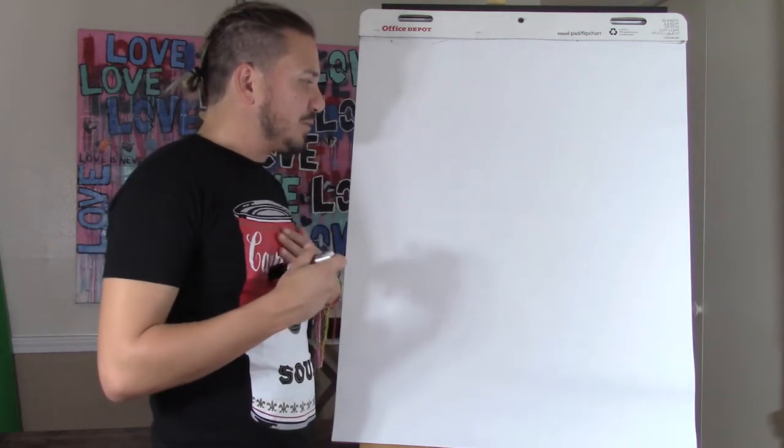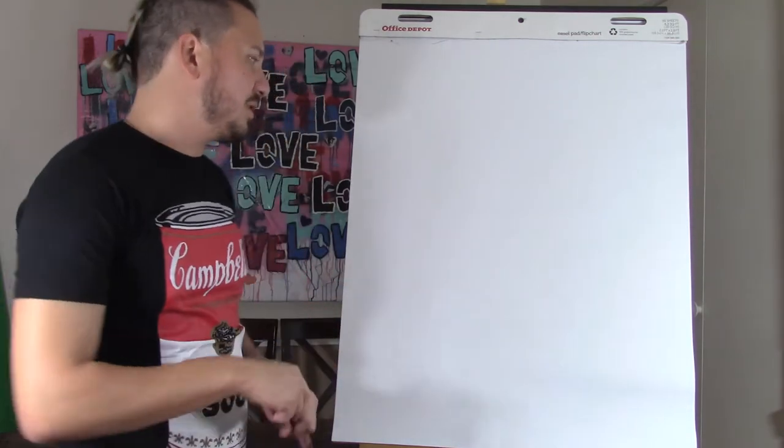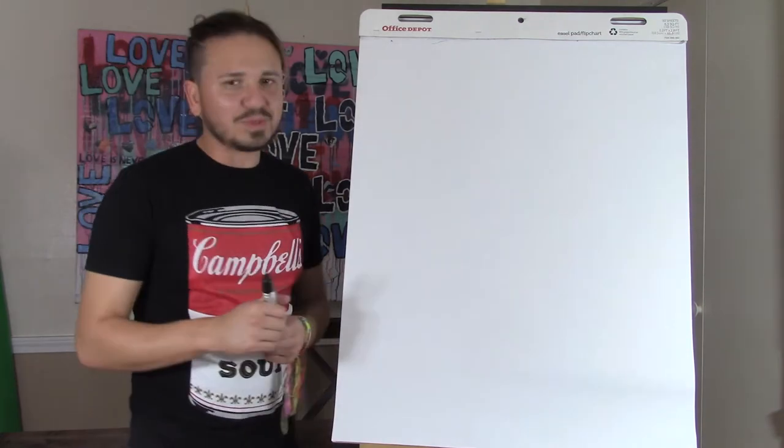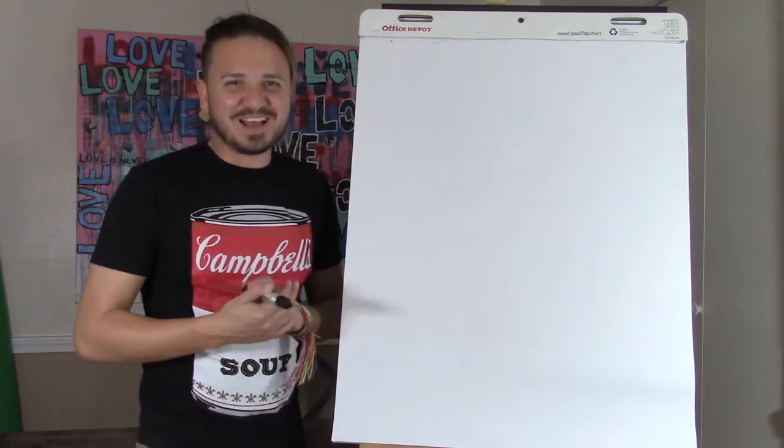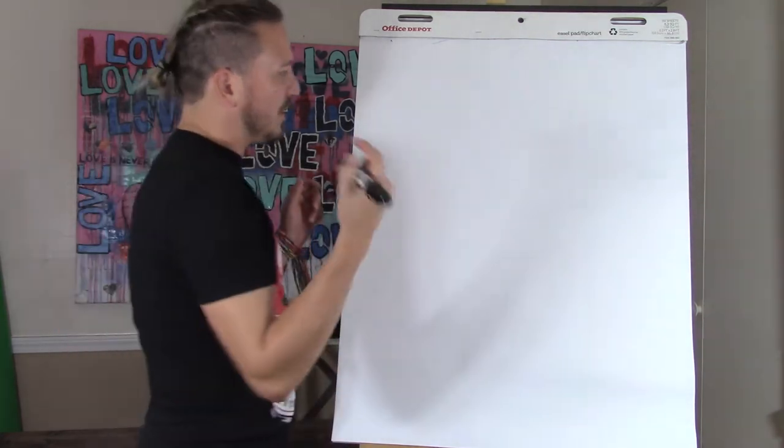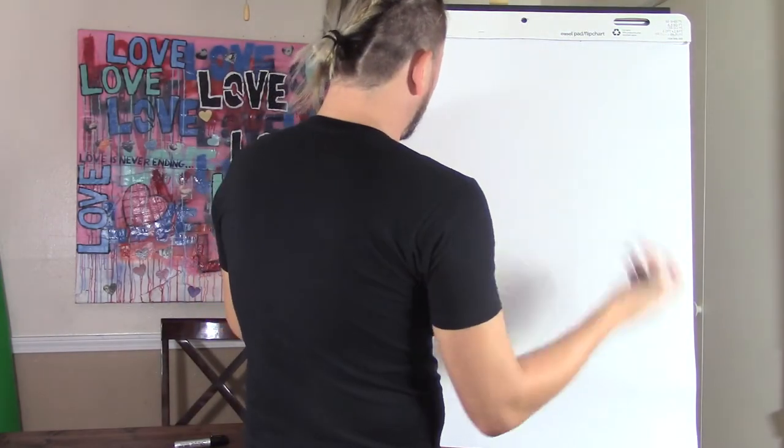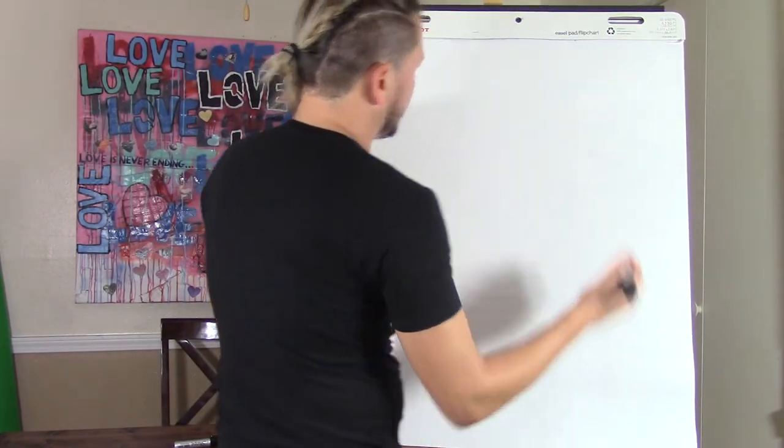So as you can see my Campbell soup can, we're going to draw today an Andy Warhol inspired Campbell soup can. We're going to start by drawing an oval at the top and this will be like the top of the can.